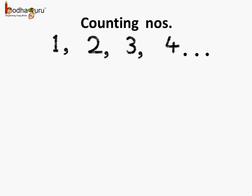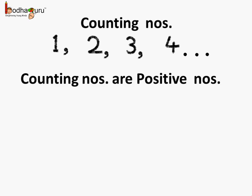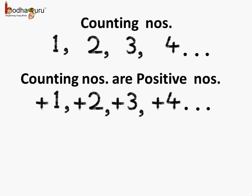Till now, we knew the counting numbers or the natural numbers, which are 1, 2, 3, 4 and so on. Actually, these counting numbers are also positive numbers. So, they can also be written as plus 1, plus 2, plus 3, plus 4 and so on. Remember, we can write 1 or plus 1, but they mean the same, which is a positive number and its value is equal to 1.